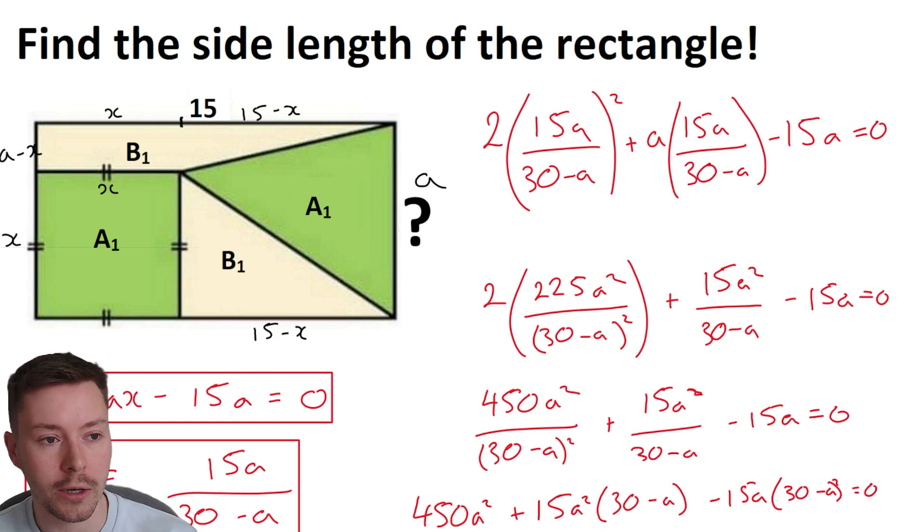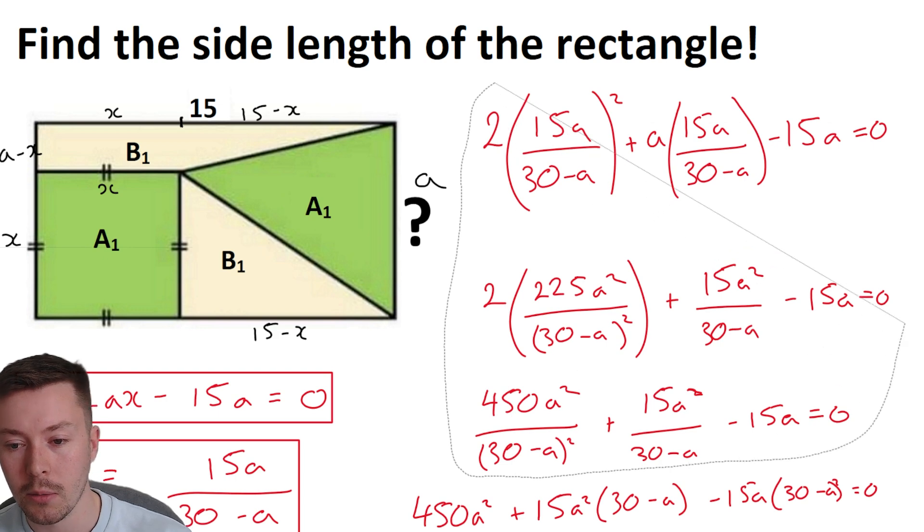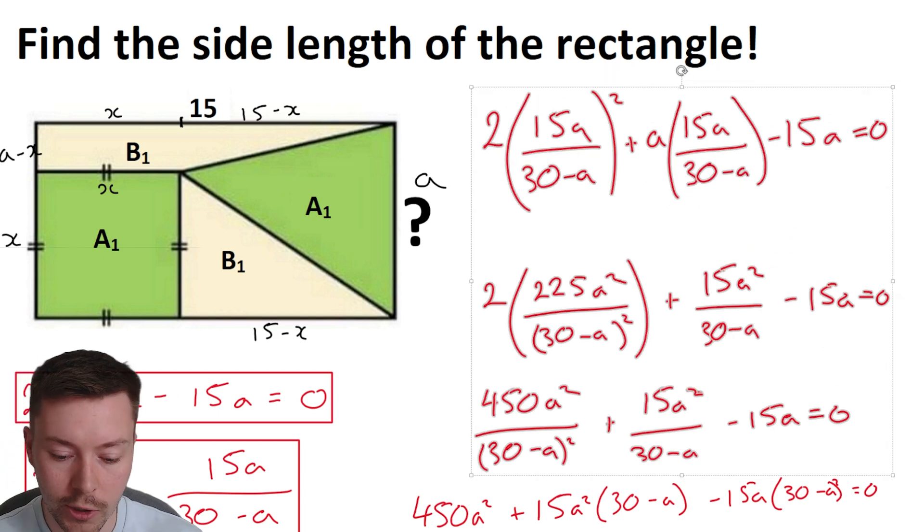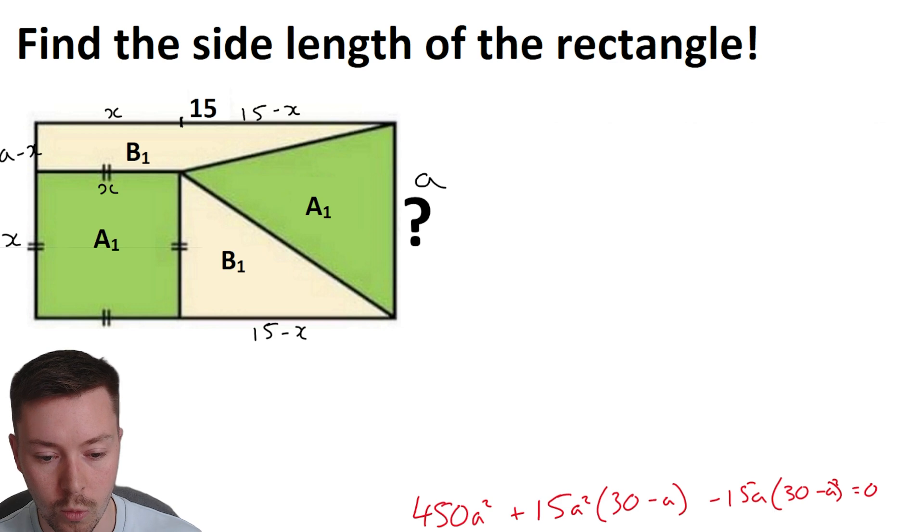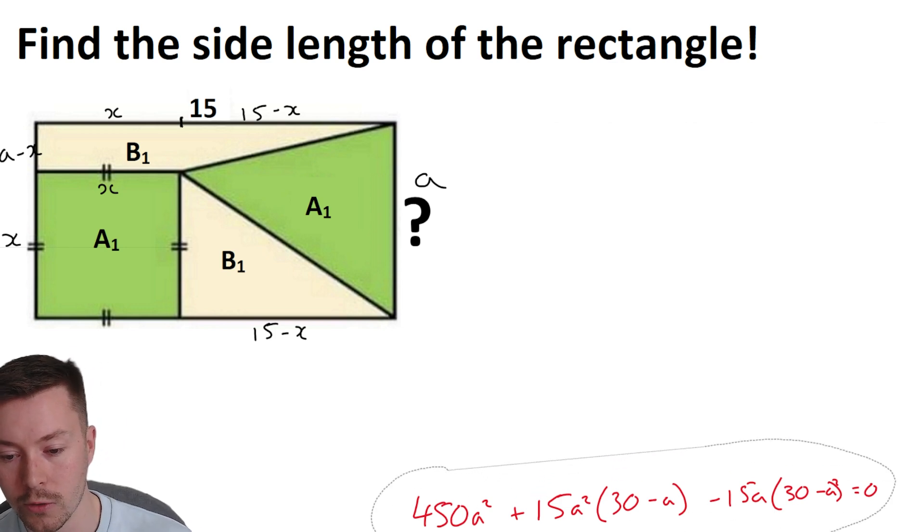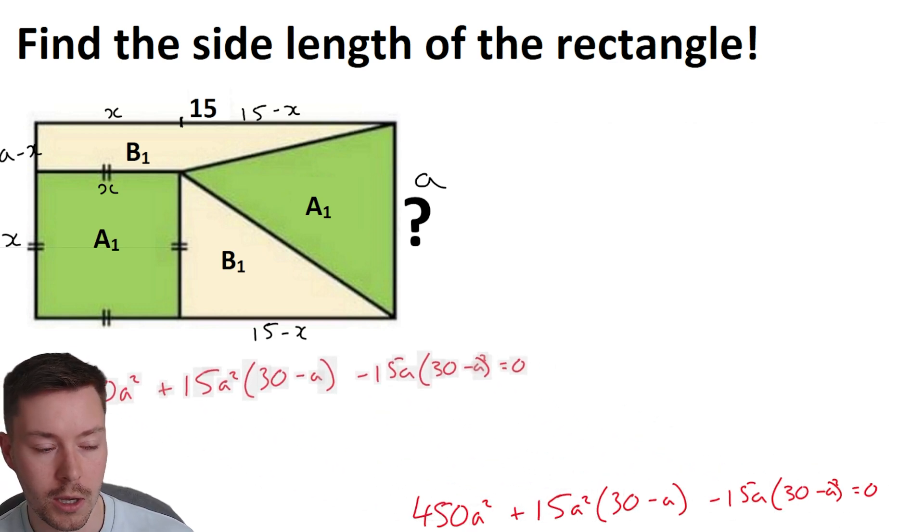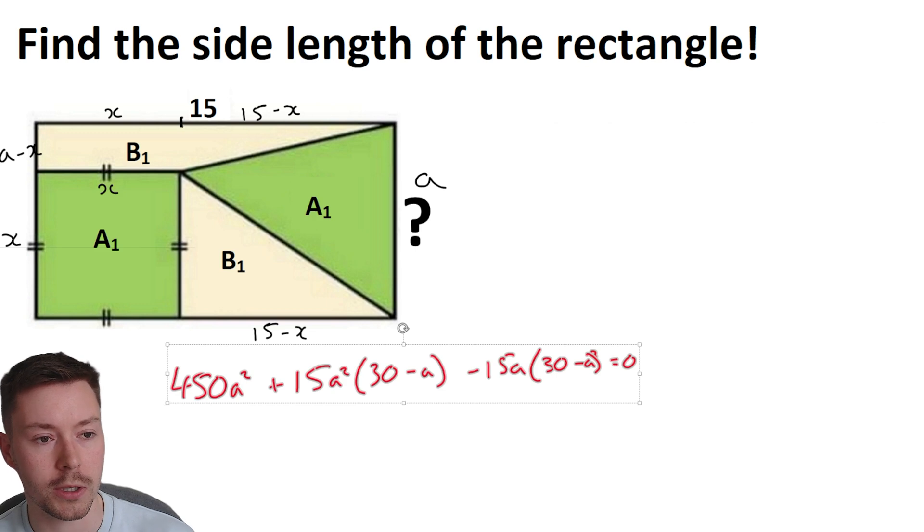Now what that's going to get me is 450 A squared, denominator will cancel there if I multiply by 30 minus A squared, and then I get plus 15A squared. Now one of the 30 minus A's will cancel here from the 30 minus A squared. So I'm just left with one 30 minus A here, and then minus 15A times by 30 minus A squared equals zero. Now I'm going to tidy all this up again, because I'm running out of space quite quickly here, but we are getting somewhere very close to the answer at this point.